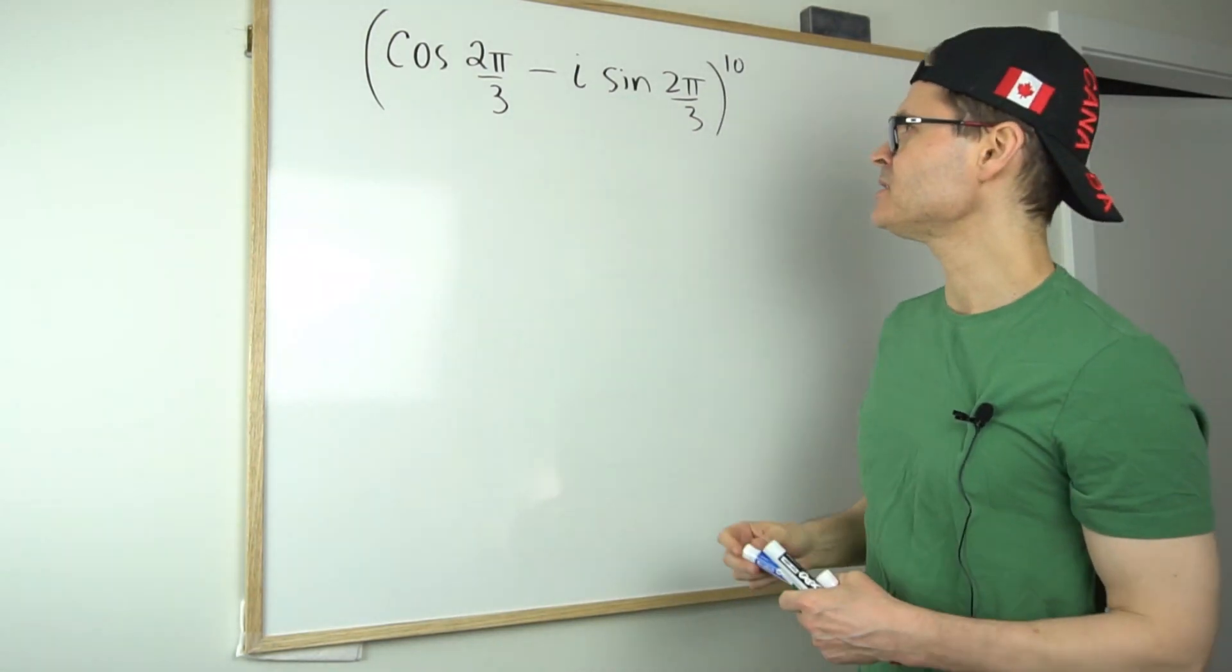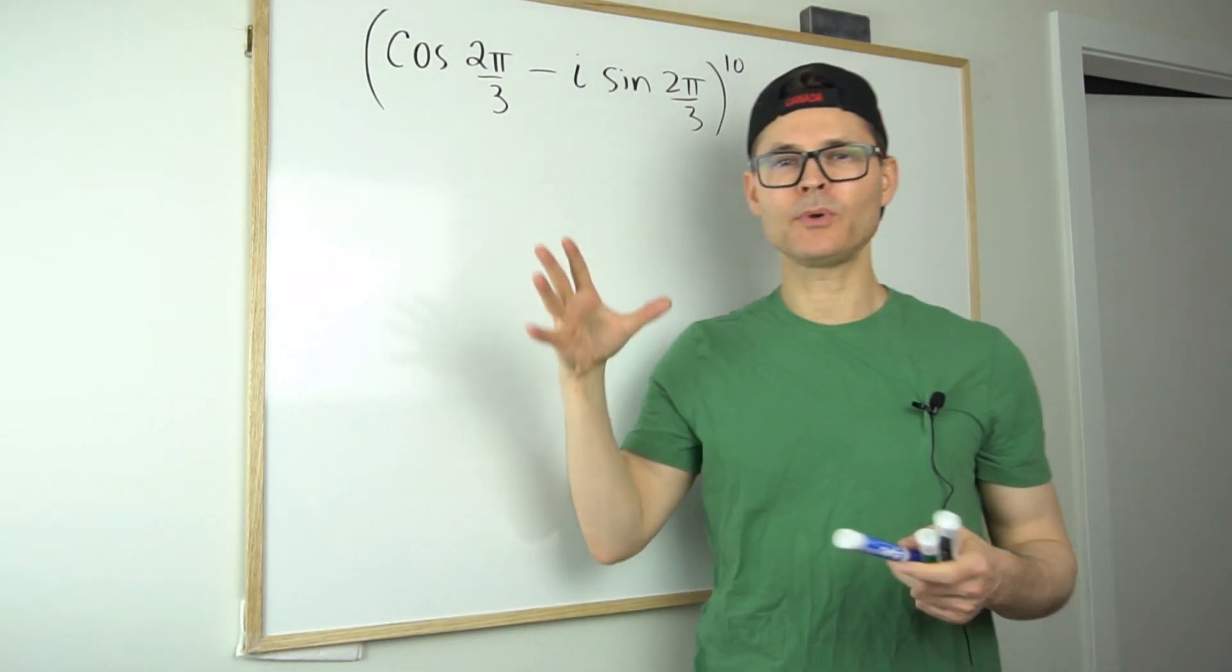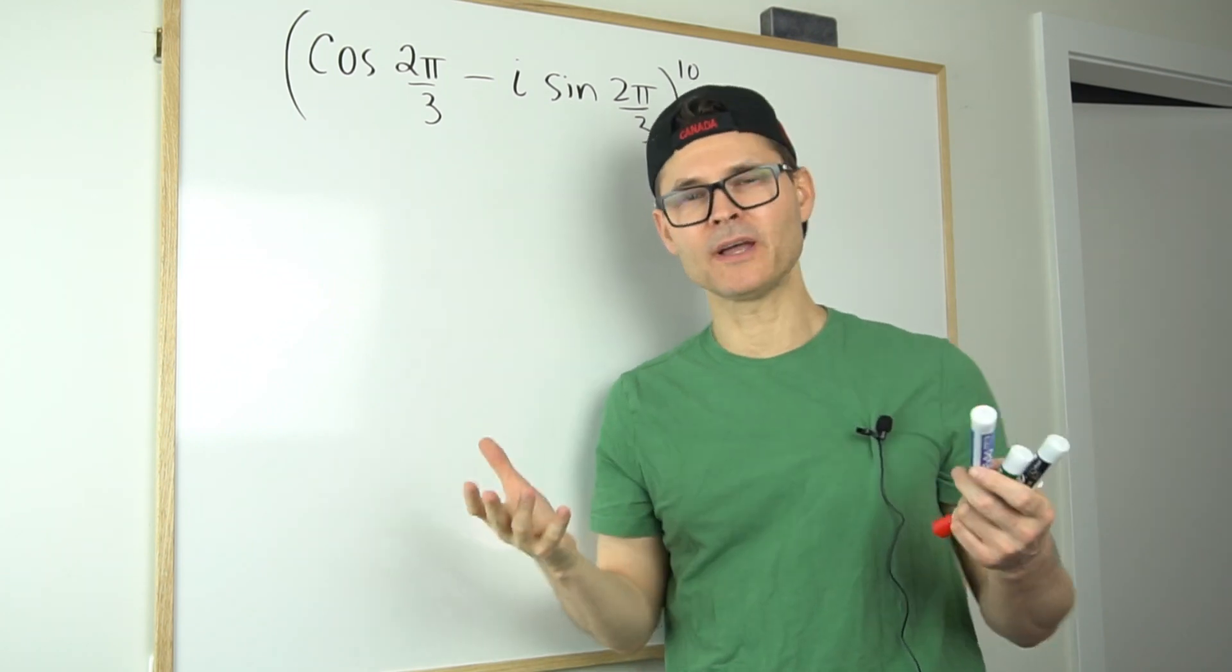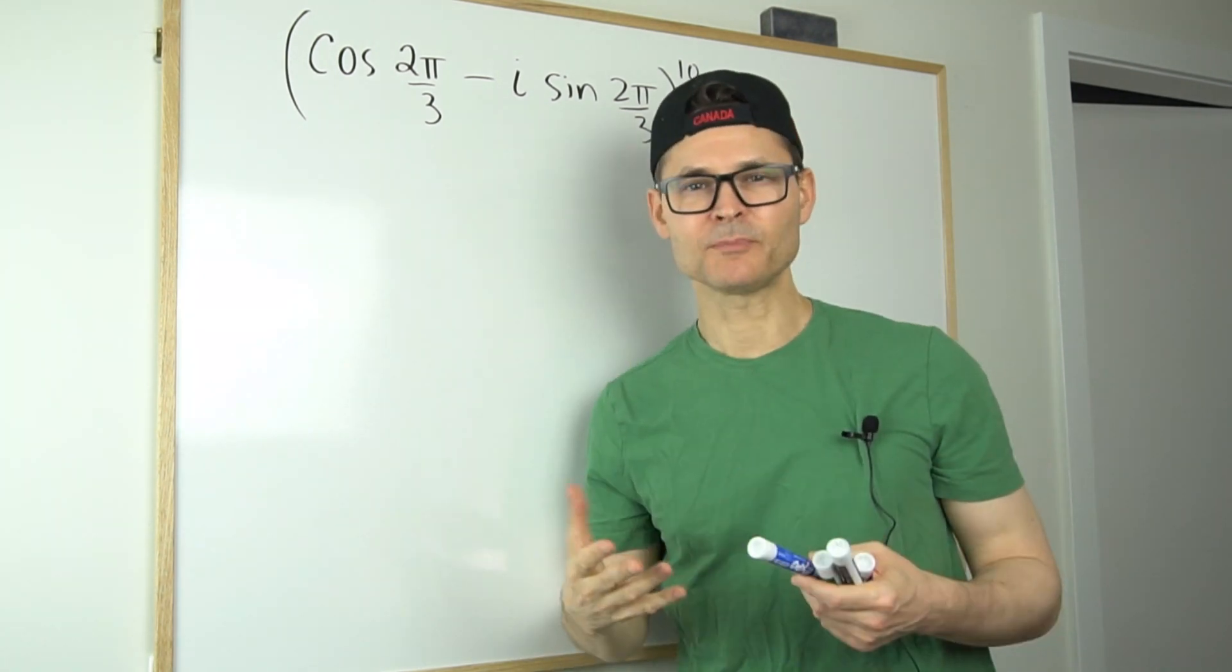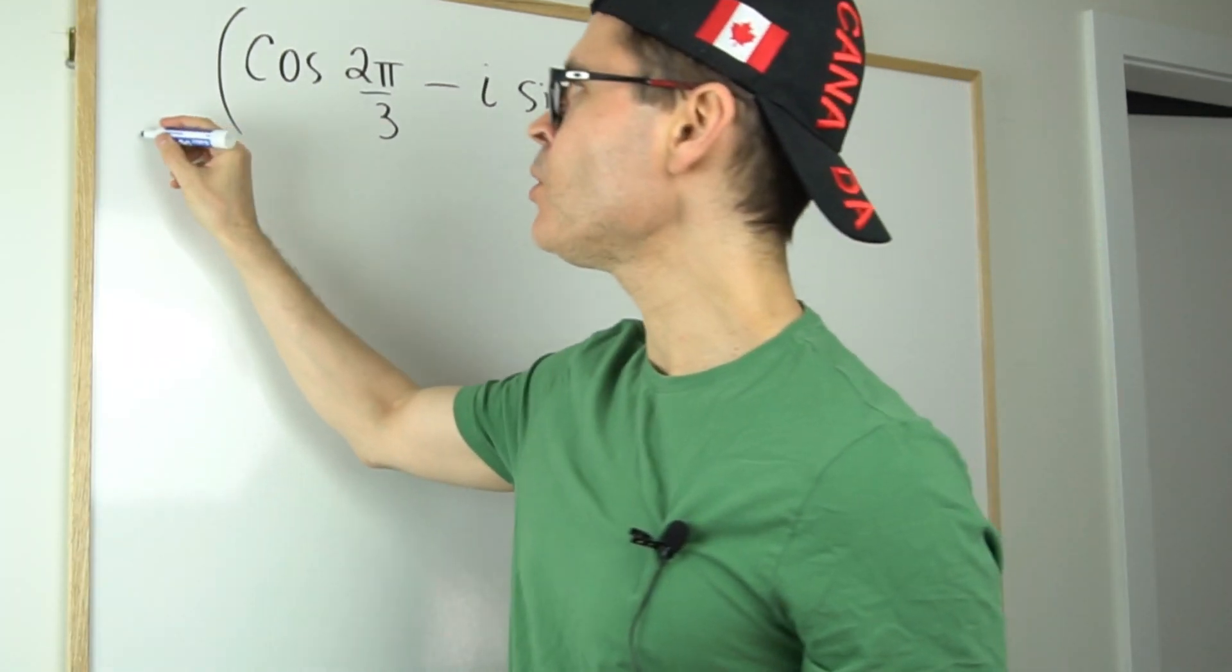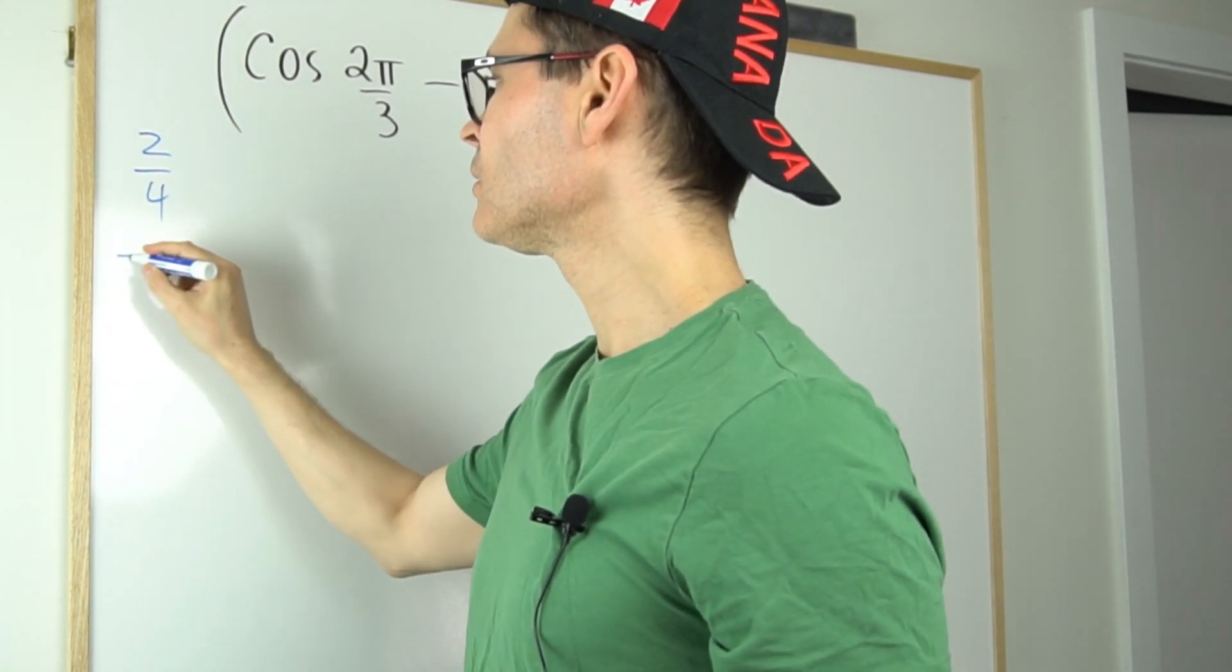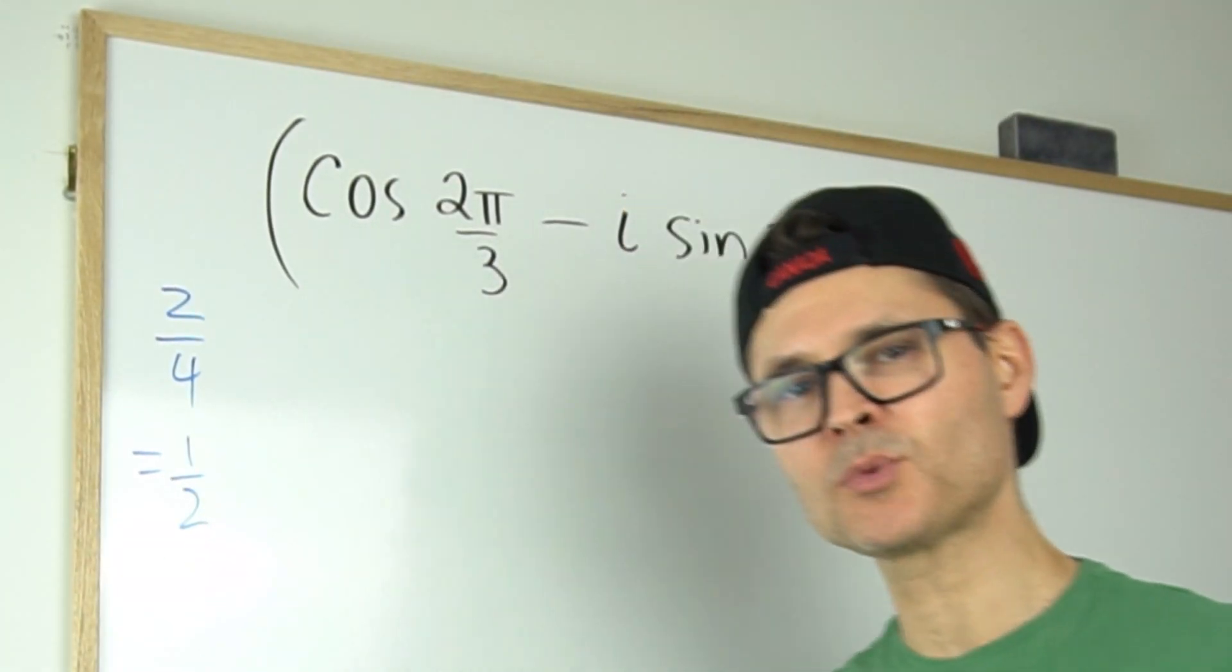Welcome back to the channel. Today we're going to take a look at a number that we want to simplify. Just like simplifying any number, there are ways to simplify numbers. Like 2 over 4, you'd simplify that. You write it as 1 over 2.